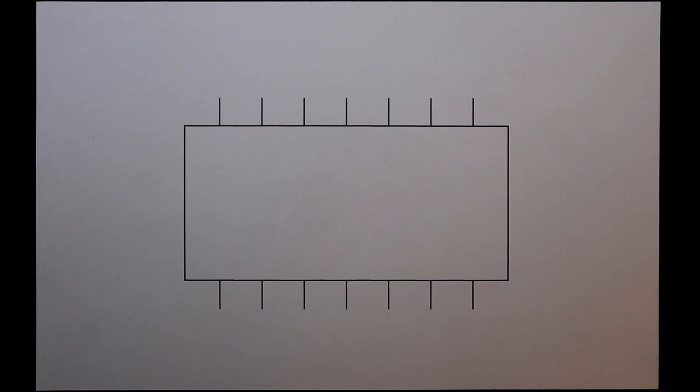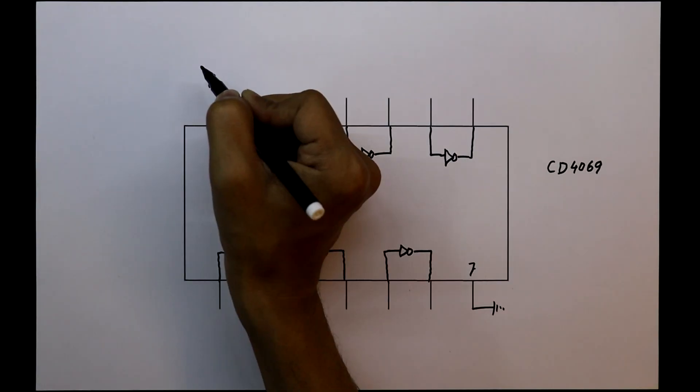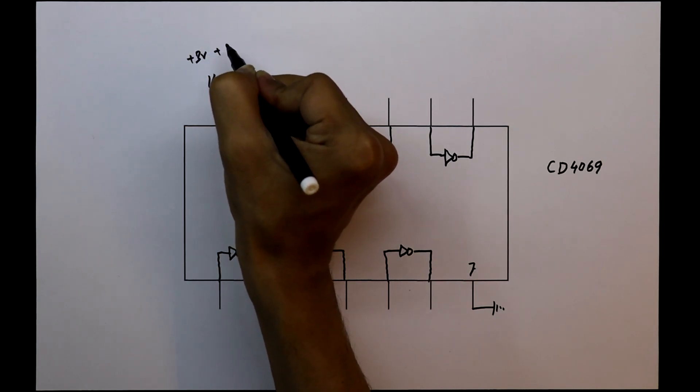CD4069 is a NOT gate IC. It has 6 NOT gates. Pin number 7 and 14 are the power supply pins. We can supply from plus 3V to plus 18V.